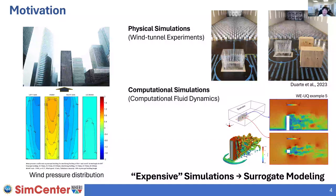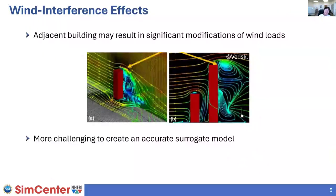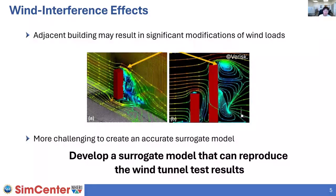This motivates the introduction of surrogate modeling, which allows you to obtain this outcome with very small computational effort once trained. In particular, we are interested in wind interference effects — when two buildings are located adjacent to each other, the surface pressure pattern at one building is perturbed by the presence of another building, making it harder to predict the pressure pattern. The goal of this work is to develop a surrogate model that can reproduce wind tunnel test results concerning those interference effects.